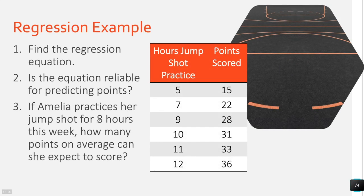Here is our example: we're going to find the regression equation Y-hat equals ax plus b, then use the R value to determine if the equation is reliable for predicting, and finally use the regression equation to predict for eight hours of practice. Finding the regression equation is step one. For step two — is it reliable? — we do the R value to see if it's strong. If it is strong, it's reliable; if not, it's not reliable. Then we'll plug in to our regression equation to find the prediction.